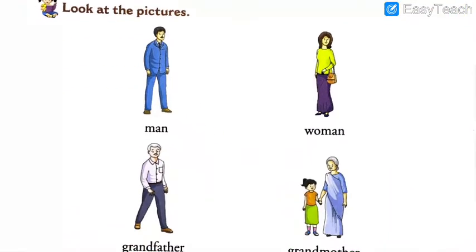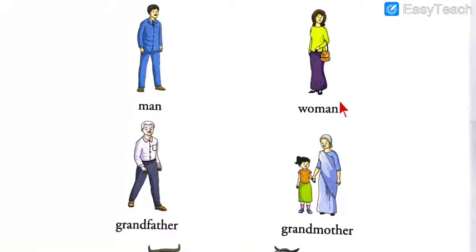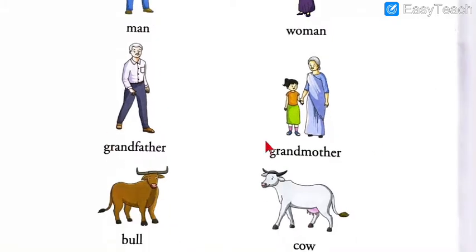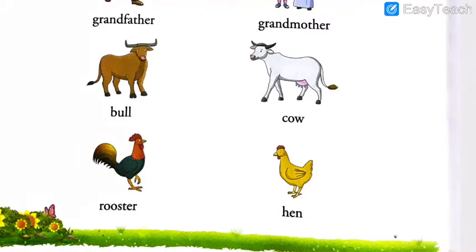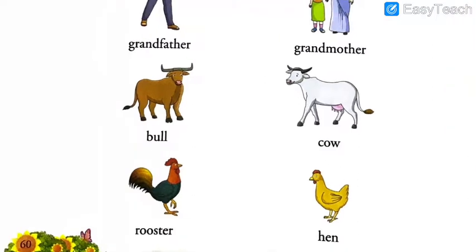Let's get started. Look at the pictures: man, woman, grandfather, grandmother, bull, cow, rooster, hen. What are all these? Are these opposites? No — these are opposite genders. Like boy and girl, you can say bull is a kind of boy in animals and cow is a kind of girl. Just as human beings have different genders — man, woman, boy, girl — animals also have different genders. The perfect name for all the men's side and all the women's side is masculine gender and feminine gender.